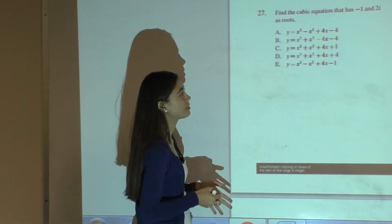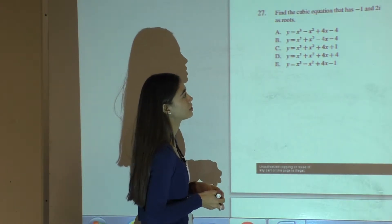So question 27 says, find the cubic equation that has negative 1 and 2i as roots.